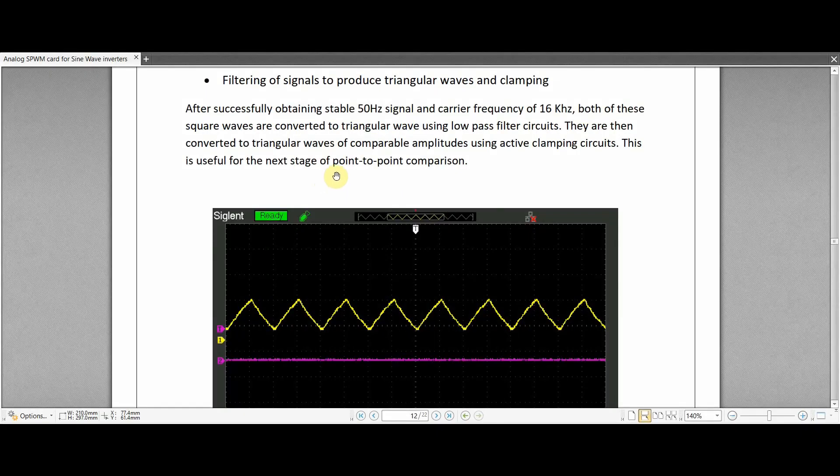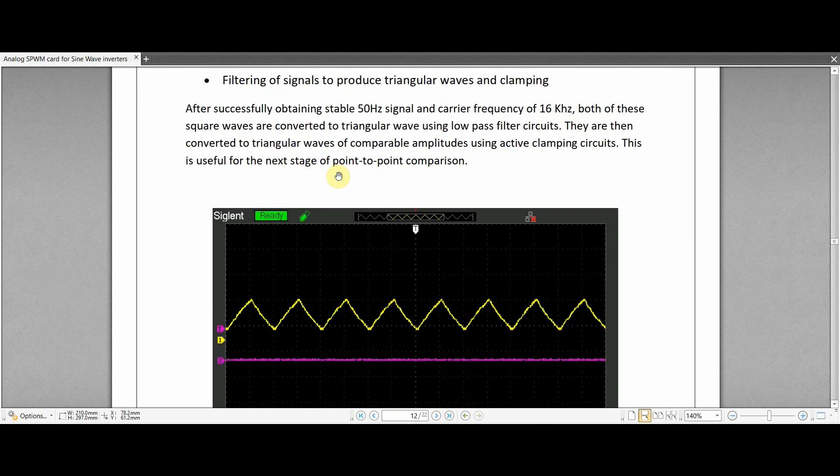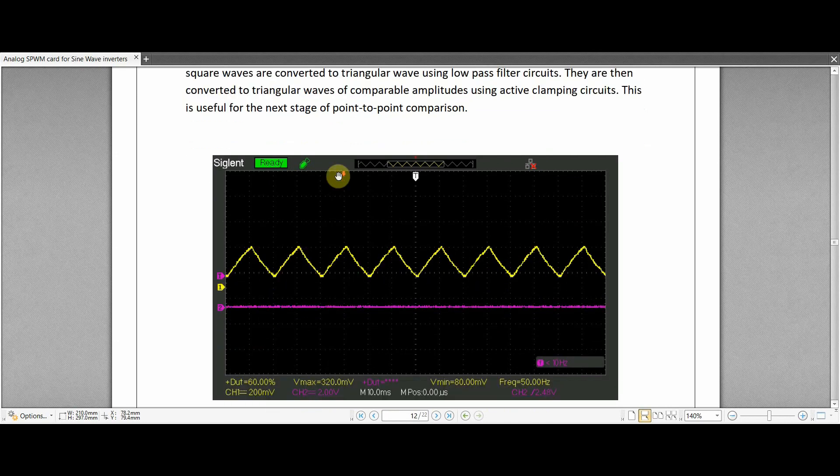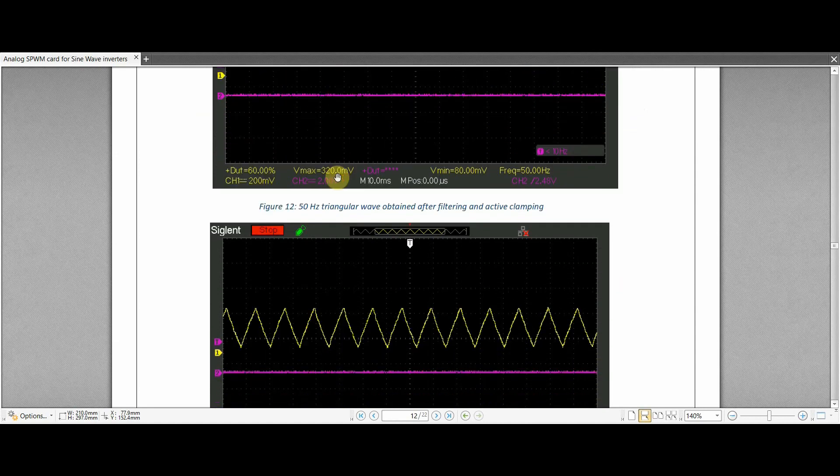With the 50 Hz and the 16 kHz square wave signals obtained, it is now time to convert them into triangular waves which can be compared to later on generate these signals. For this I have used a low pass filter consisting of RC circuits. I have also used active clamping so as to keep the amplitude of both the signals within the same range so that they can be compared with equal magnitudes in mind.